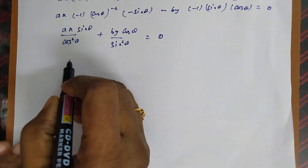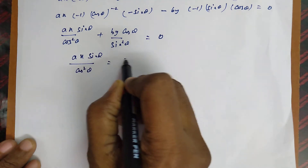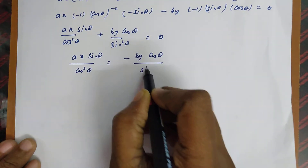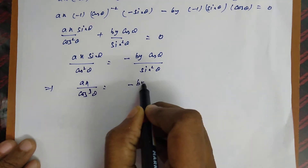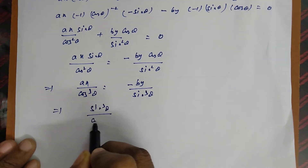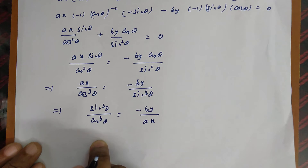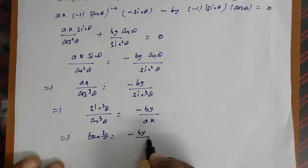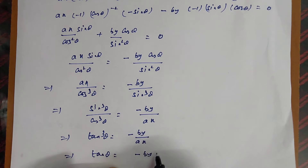Rearranging: ax sinθ / cos²θ = −by cosθ / sin²θ, which implies ax / cos³θ = −by / sin³θ. From this, sin³θ / cos³θ = −by / ax, so tan³θ = −by / ax, which gives tan θ = −(by)^(1/3) / (ax)^(1/3).